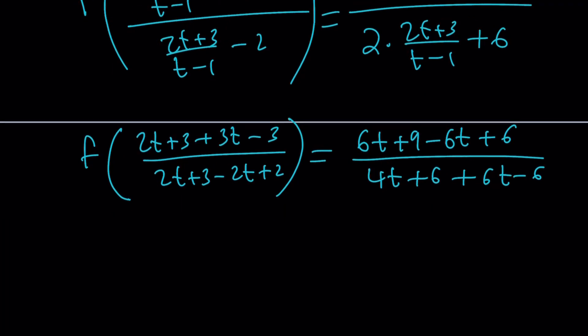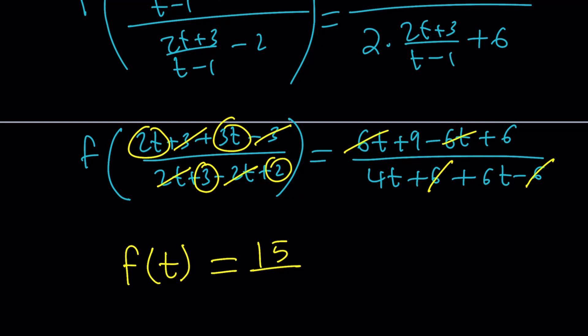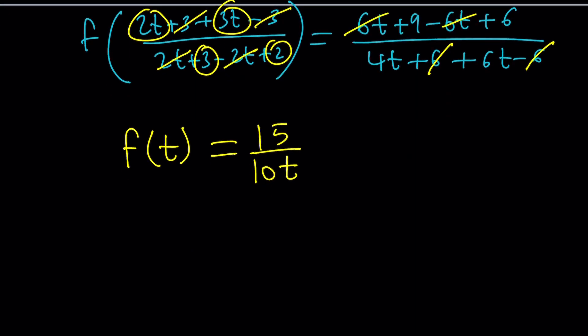Now, if you simplify this, you're going to get the following. 3 is going to cancel out. Here, 2t is going to cancel out. You're going to get 5t divided by 5, which is t. I told you it was going to be t, but we still checked it. I don't know why. And then this is going to give you 15 over 10t. What does that mean? Simplify. Divide by 5. And you're going to get this.